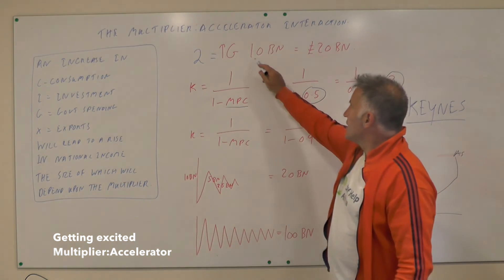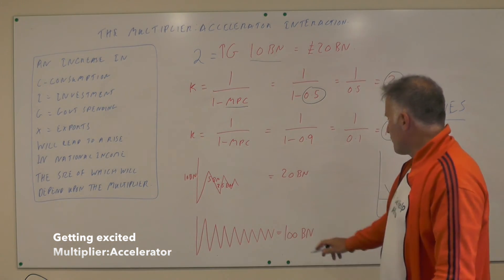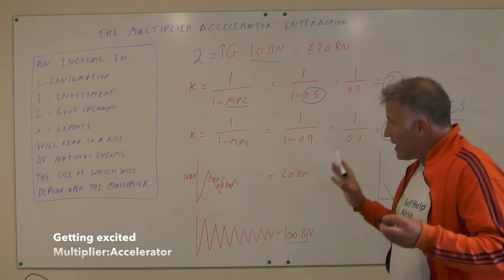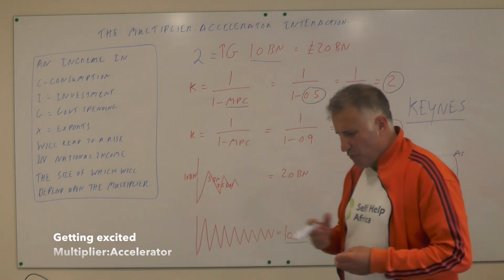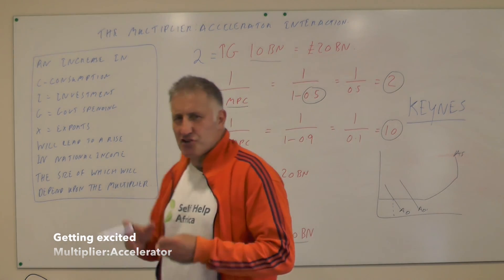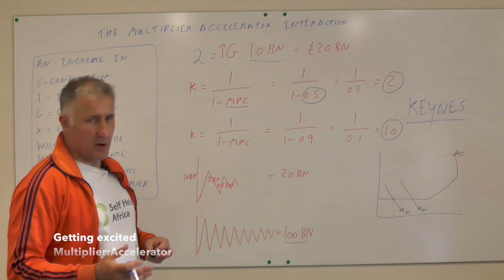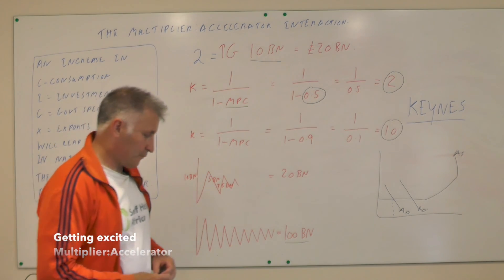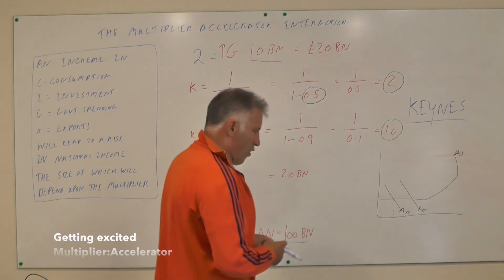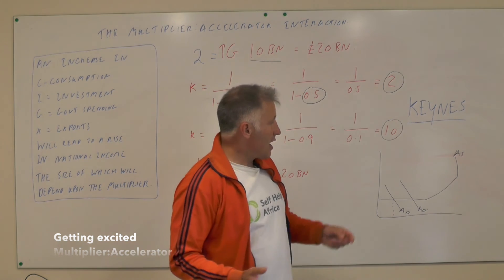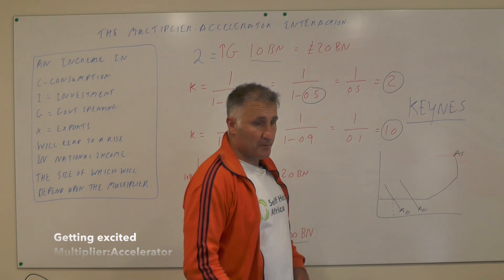In this case, if we put in ten billion quid, at the end of the day we're going to get a hundred billion pounds out. Now believe it or not, before Keynes came along nobody really appreciated that. No one really thought about the fact that if you put some amount of money into the economy then we're going to get more money out. So why don't we just do that?